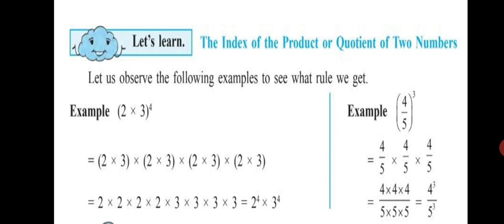Example: (2 × 3) raised to 4. Here 2 × 3 is our base and 4 is our index. In multiplication form, we write it as the base multiplied by itself 4 times: (2 × 3) × (2 × 3) × (2 × 3) × (2 × 3).